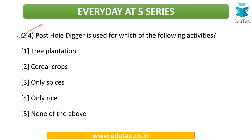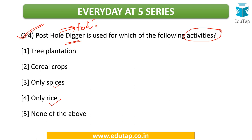The fourth question: a post hole digger is used for which of the following activities? Are we using it for tree plantations, cereal crops, spices, or rice? Kindly mention the answer in the comments below. Friends, this is a very nice way of learning — when you come across questions, your desire for learning increases, you become inquisitive, and you search for answers. In that process, you also come across many other concepts. Please make this series an interactive one and come up with answers in the comments.